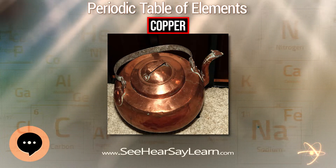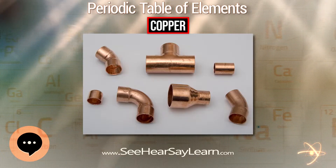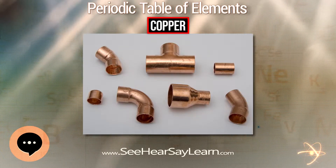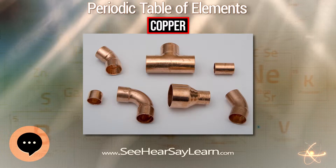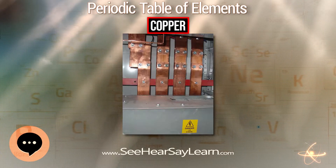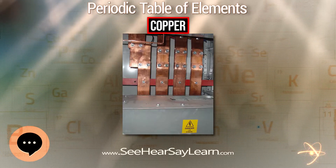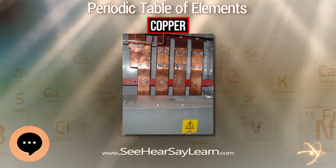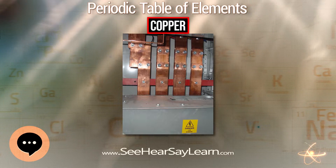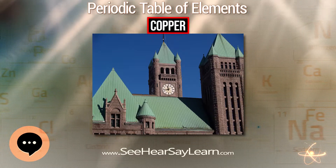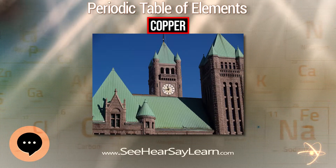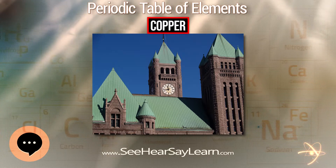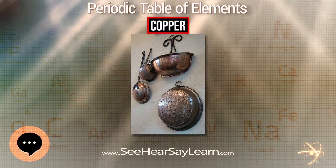The characteristic color of copper results from the electronic transitions between the filled 3d and half-empty 4s atomic shells. The energy difference between these shells corresponds to orange light. As with other metals, if copper is put in contact with another metal, galvanic corrosion will occur.